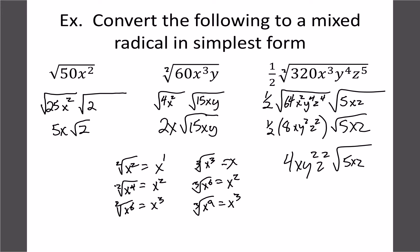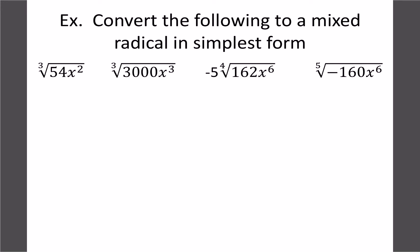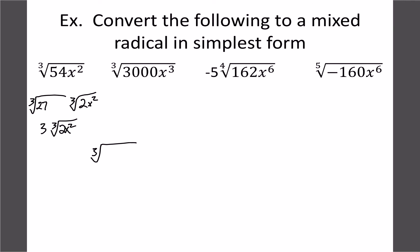Now cube root examples. For ∛(54x²): 54 = 27×2, and for x² we need multiples of 3 — there are none in 2, so x² stays as a leftover. ∛27=3, so the answer is 3∛(2x²). For ∛(3000x³): 3000 = 1000×3, and x³ is a perfect cube so it comes out front entirely. ∛1000=10, giving final answer 10x·∛3.